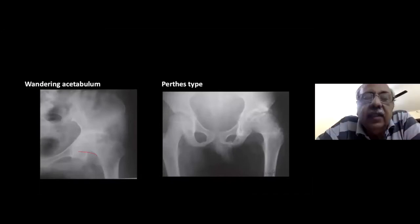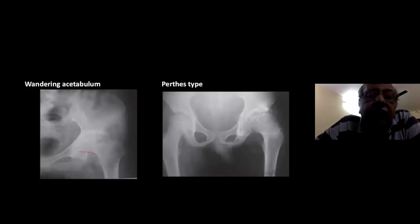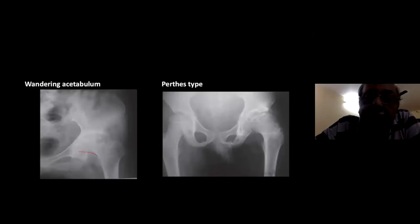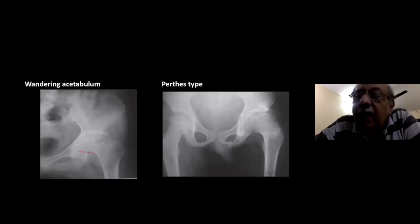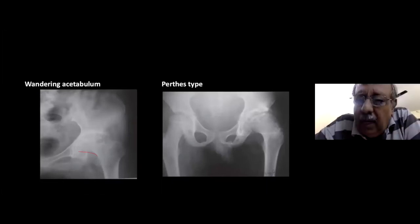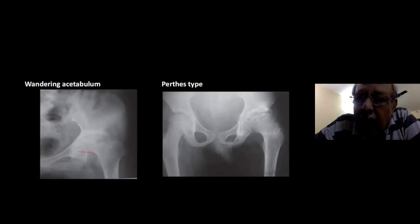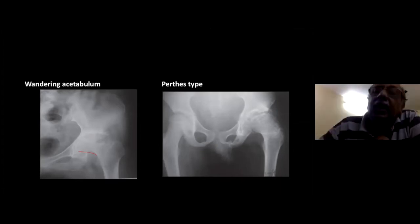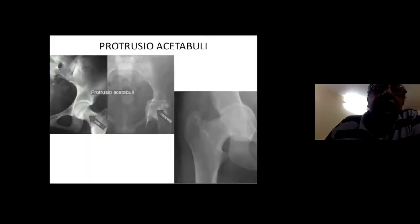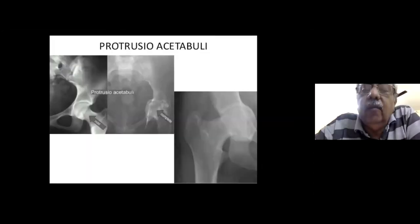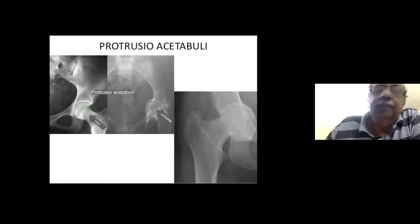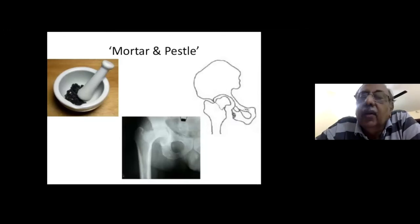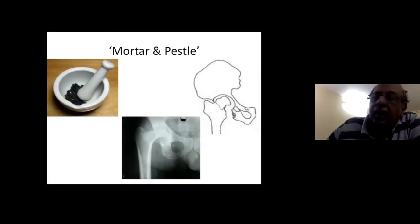In the wandering acetabulum type, the superolateral aspect of the acetabulum is progressively destroyed and the femoral head gradually subluxates upward — it is the femoral head following the acetabulum rather than dislocating suddenly. In the Perthes type, vascular compromise from effusion tamponade or tuberculous endarteritis causes the femoral epiphysis to lose blood supply, producing Perthes-like changes. In protrusio acetabuli, the medial wall is rarely involved and the head projects into the pelvis. In the mortar-and-pestle type, there is a small head within a large acetabulum.